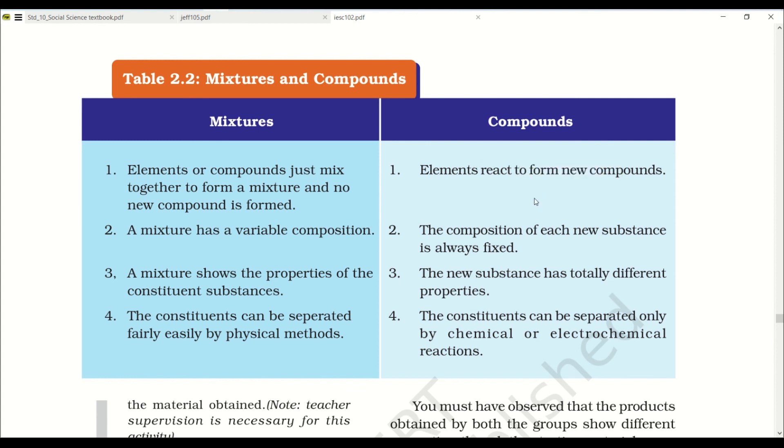Here you can give an example of water. Water is a compound, and here you can give lemon juice that is the mixture of water and lemon. A mixture has variable composition, while in a compound the composition of each new substance is always fixed. A mixture shows the properties of the constituent substances. That means the water remains as water. While in the compound, the new substance has totally different properties.